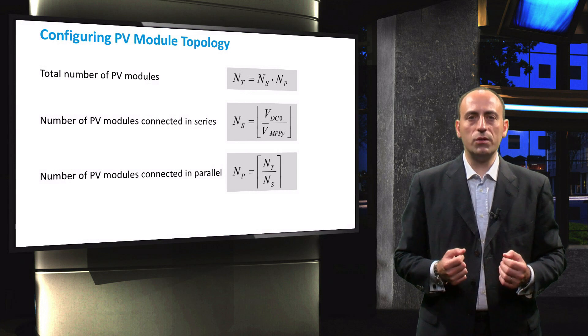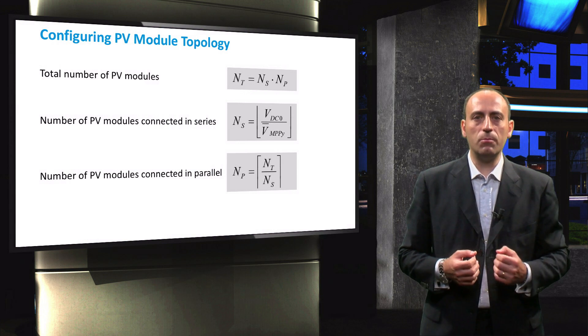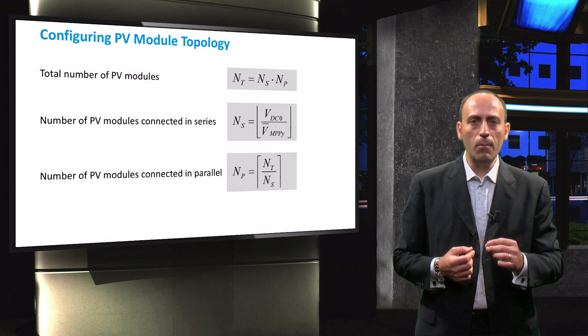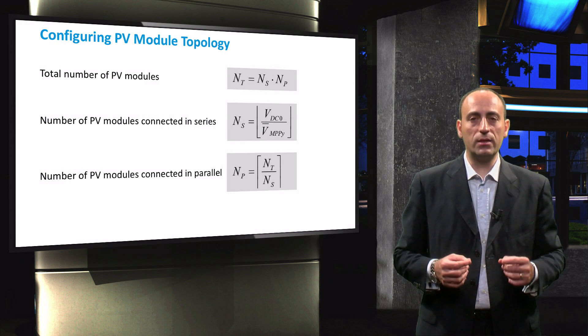Dividing the nominal DC voltage of the inverter by the averaged maximum power point voltage of the PV modules, we find the number of modules that should be series connected in a string.